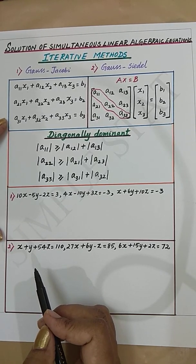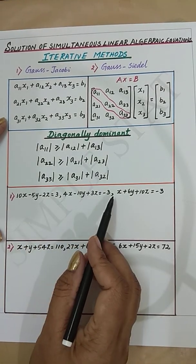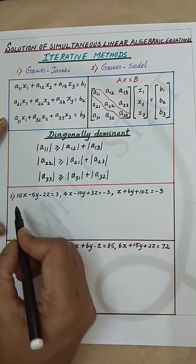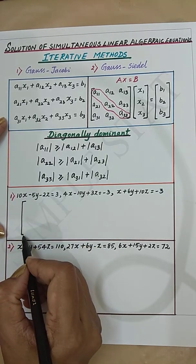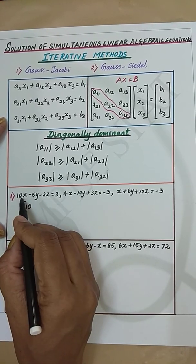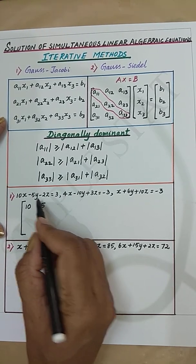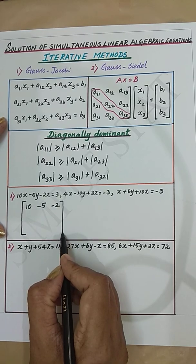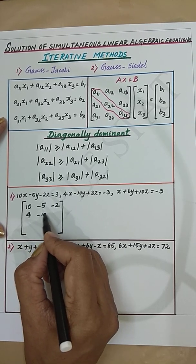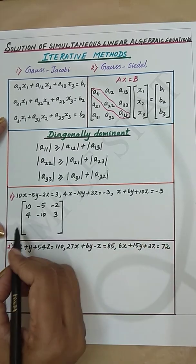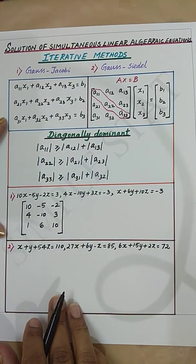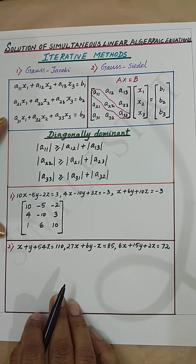Let's now discuss a few examples. For the first problem, the first step is to write the coefficient matrix. The coefficient matrix will be: 10, -5, -2 from the first equation; 4, -10, 3 from the second equation; and 1, 6, 10 from the third equation. Let us check if this is a diagonally dominant matrix.